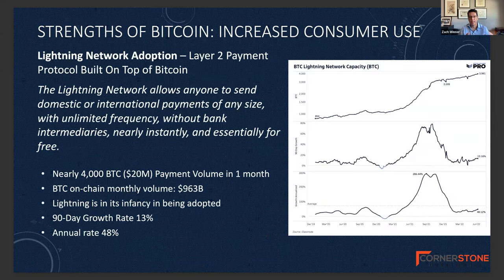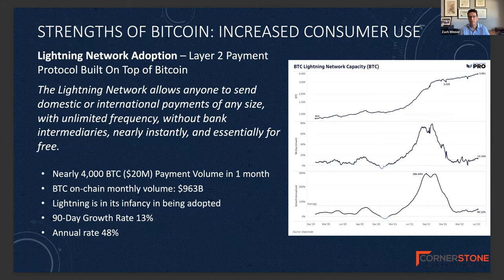There's a technology called the Lightning Network that's really going to continue to stimulate the use of Bitcoin as a means of payment and transferring money. The Lightning Network will allow anyone to send domestic or international payments of any size with unlimited frequency, without bank intermediaries, nearly instantly and essentially for free. It's still in its infancy, but its 90-day growth rate is 13% and its annual growth rate is 48%. The Lightning Network really has the potential to displace wire transfers and Western Union, which are both very expensive alternatives.